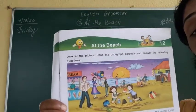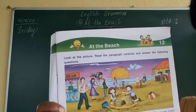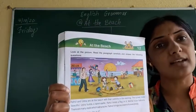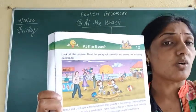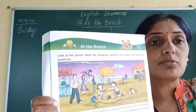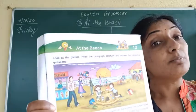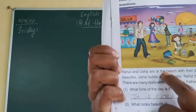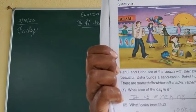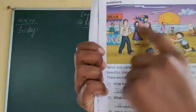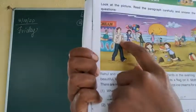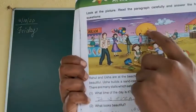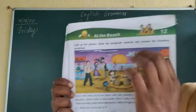When you go to Goa you will see so many beaches. Alibag, Murud Janjira — there are a lot of beaches. On the Konkan side also some beaches are there. Mumbai also has a beach. Now: Rahul and Usha are at the beach with their parents in the evening. The sunset looks beautiful.